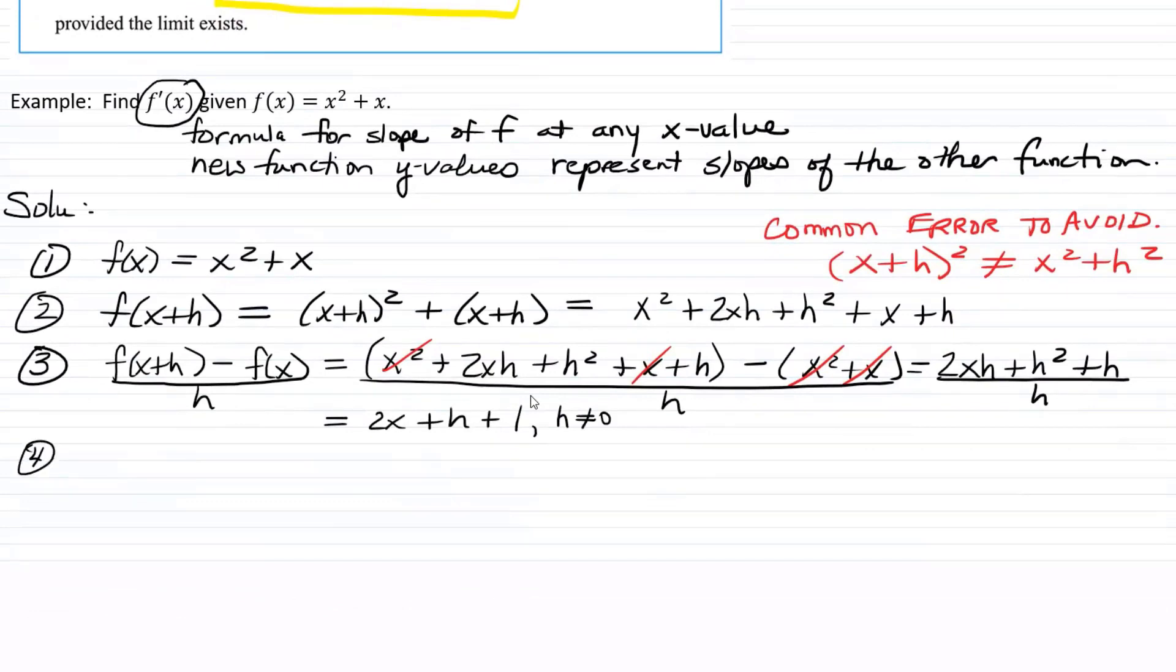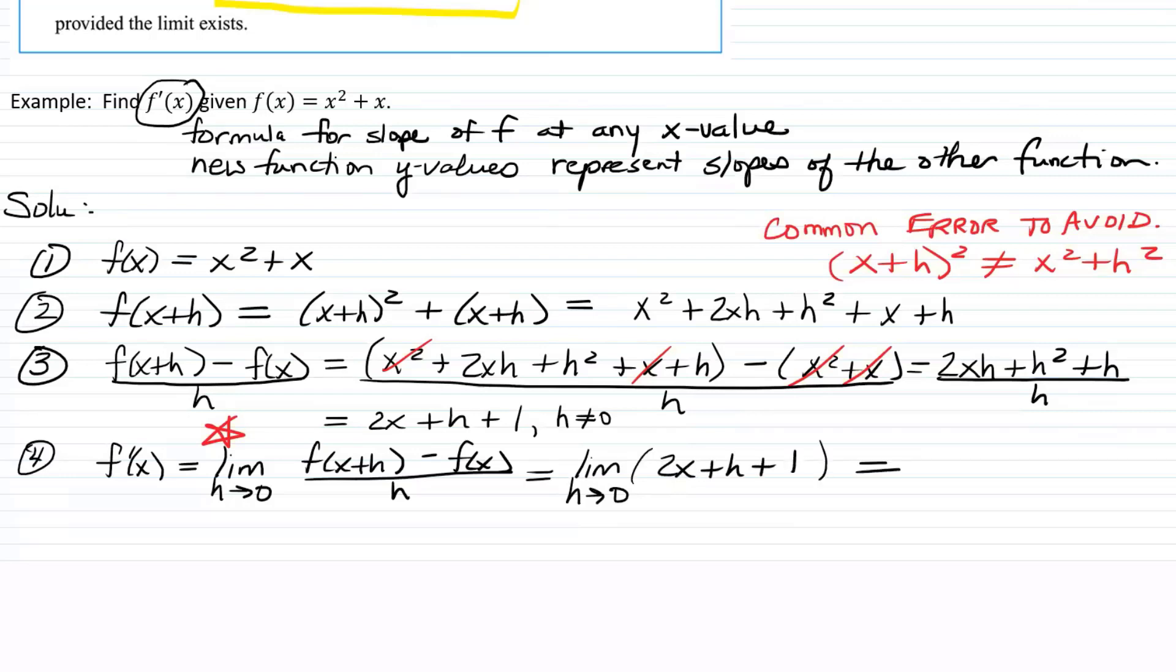So then now let's find the derivative f prime of x equals the limit as h approaches zero of f of x plus h minus f of x over h. And by the way, you do definitely want to memorize this. Work a few homework problems, and you'll probably memorize it pretty quickly, if you haven't already. So that's going to be the limit as h goes to zero of 2x plus h plus 1. Now be careful here. Only the h is going to zero. Nothing is happening to x.